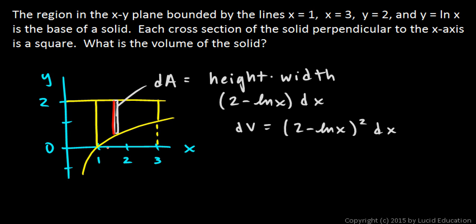And then we just need to integrate that from one to three, and we're done. So the volume is the integral from one to three of 2 minus the natural log of x, quantity squared, dx.